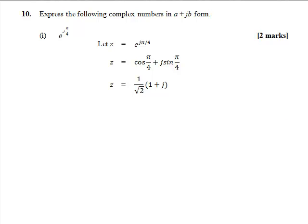Part 2: e to the minus j pi over 4. So as before, we'll let z equal e to the minus j pi over 4. So z is equal to cos minus pi over 4 plus j sine minus pi over 4. This time, cos is equal to 1 over root 2, and sine is equal to minus 1 over root 2. So we can take the 1 over root 2 outside a bracket of 1 minus j.